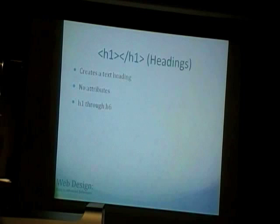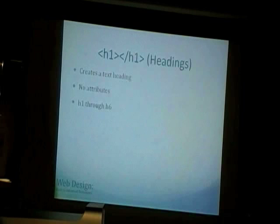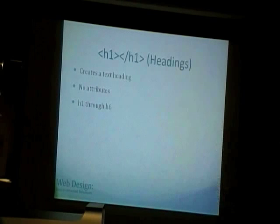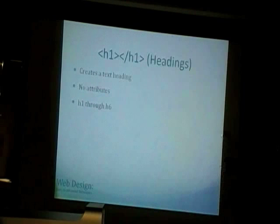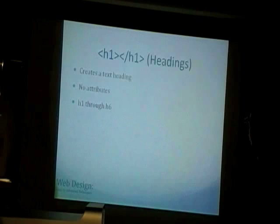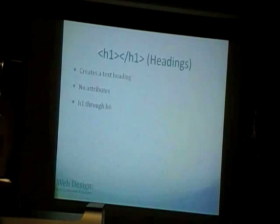Headings are tags that allow you to create text that's differentiated from normal text — most of the time it's larger, and it differs in size and boldness. There are six types of headings: h1, h2, h3, h4, h5, and h6, and they don't necessarily contain attributes like class.